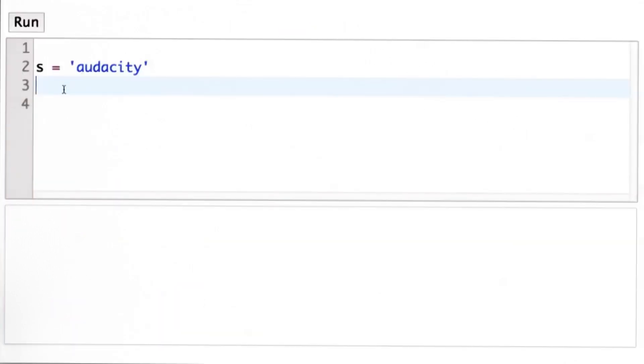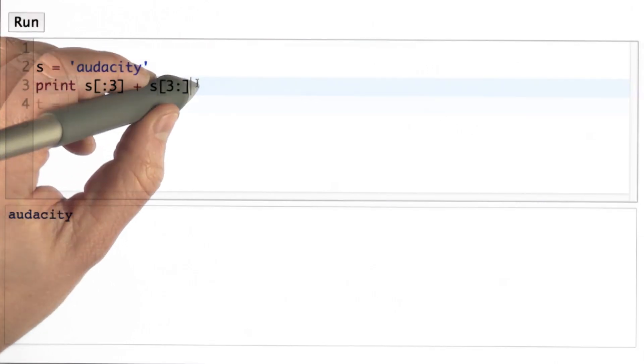So here's how that works in the Python interpreter. We'll do s from the beginning to index 3, and add that to s index 3 to the end. That produces the same string.